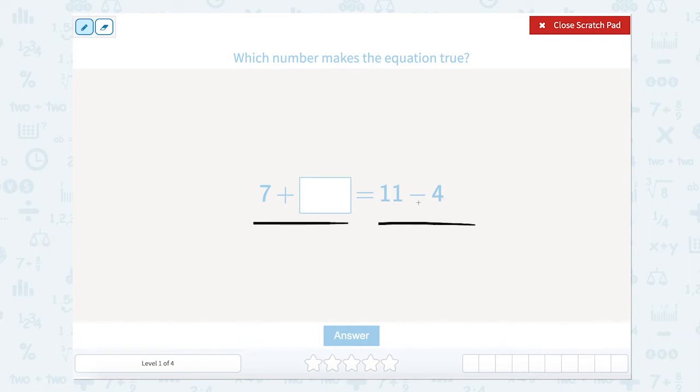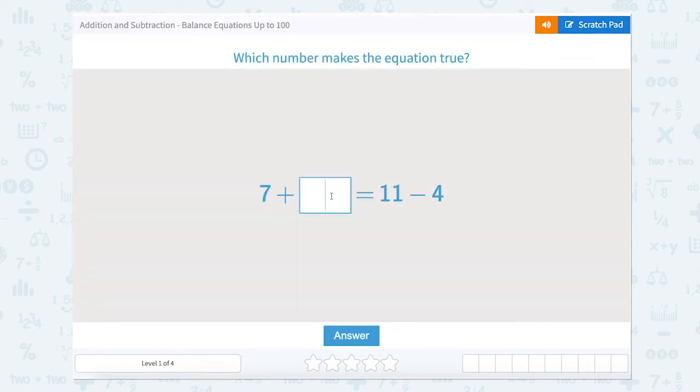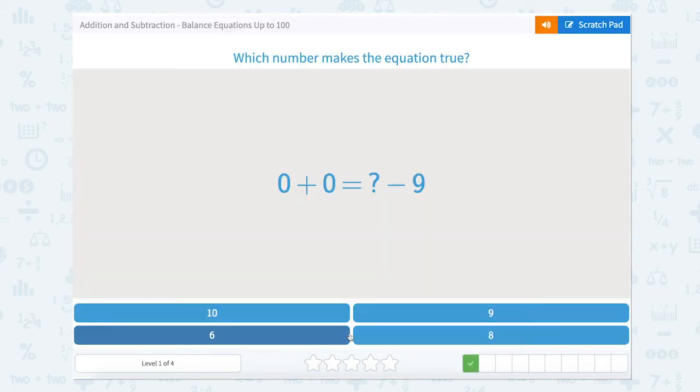What is 11 minus 4? Well, 11 minus 4 is 7, so we have 7 plus blank equals 7. So what number must be true, must be placed here to make this equal to 7? Well, 7 plus 0 equals 7. So let's place that in there and answer our problem.